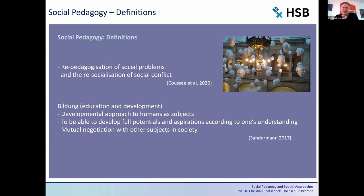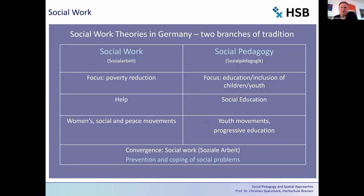In Germany we always talk about Soziale Arbeit, which is a roof or umbrella term for social work and social pedagogy. From history until the early 1990s, there were two different branches. The first, social work, focused on working with adults, with poverty and exclusion, helping people — connected to the women's movement, the social movement, and figures like Alice Salomon, Jane Addams, and Mary Richmond.